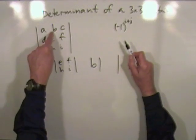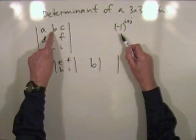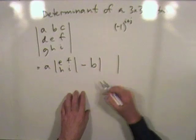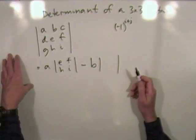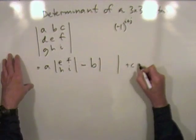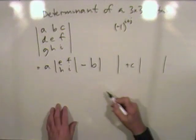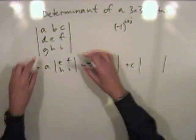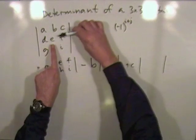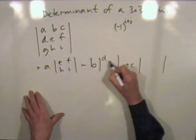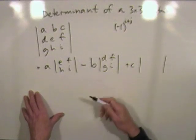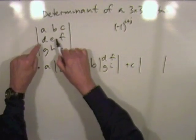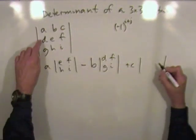C, row one column three, four, even, so when it comes to C it'll be positive. B, its minor will be the determinant of that submatrix D, F, G, I, and C times its minor which is this little determinant D, E, G, H.